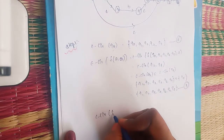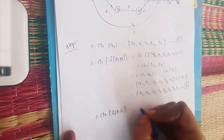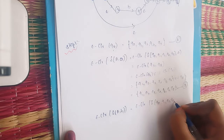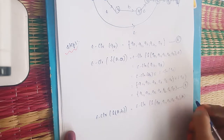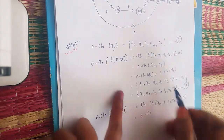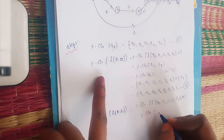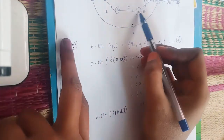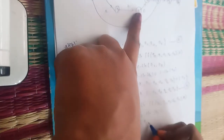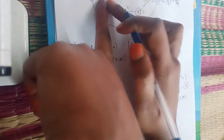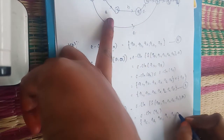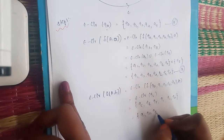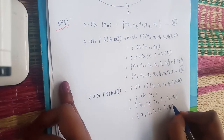Next, E-closure of δ(A, b) — that is, E-closure of δ({Q0, Q1, Q2, Q4, Q7}, b). On input b, only Q4 transitions to Q5. So we compute E-closure of Q5, which gives {Q5, Q6, Q7, Q1, Q2, Q4}. Rewriting: {Q1, Q2, Q4, Q5, Q6, Q7}, which is a new state named C.